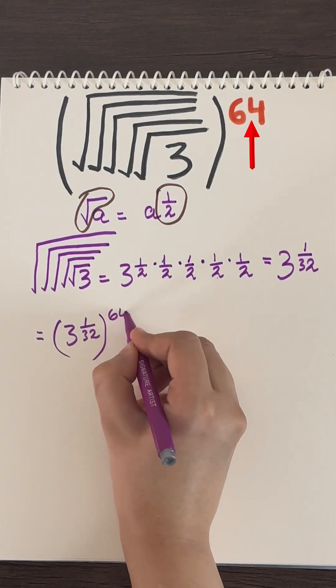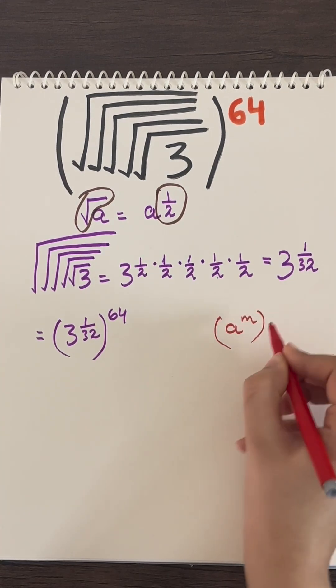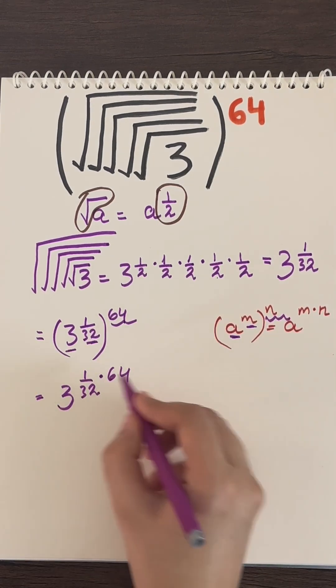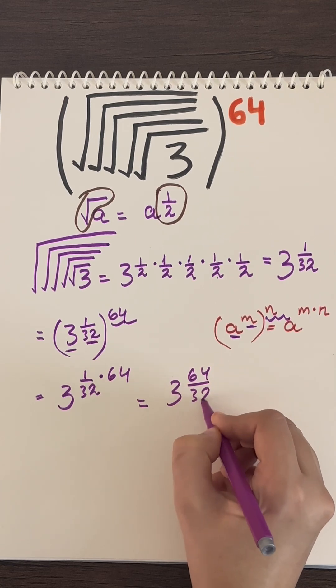Now we will bring down the power given in our main question. We already know the formula that when there is a power over another power, the powers get multiplied. So here we will multiply the powers and we get three raised to the power of sixty-four by thirty-two.